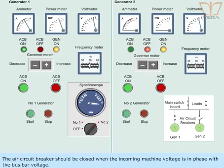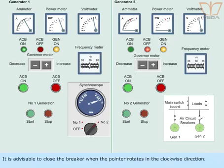The air circuit breaker should be closed when the incoming machine voltage is in phase with the bus bar voltage. It is advisable to close the breaker when the pointer rotates in clockwise direction.